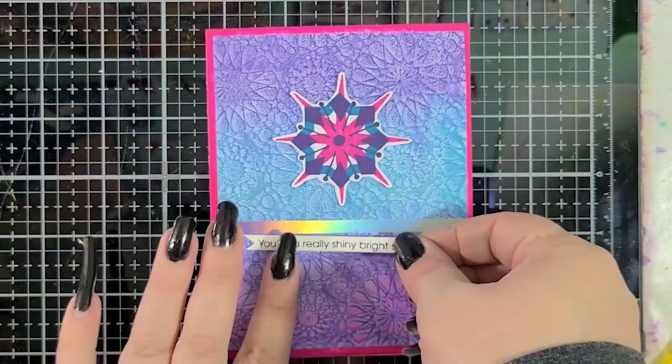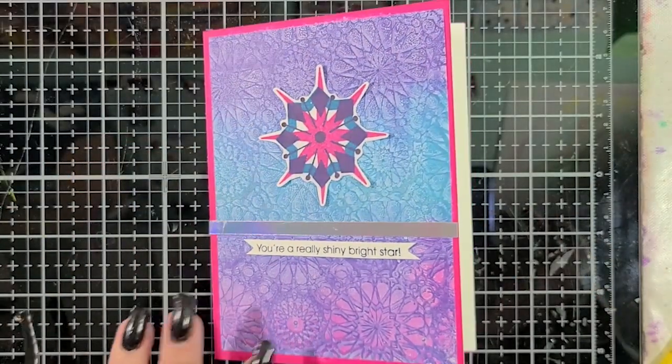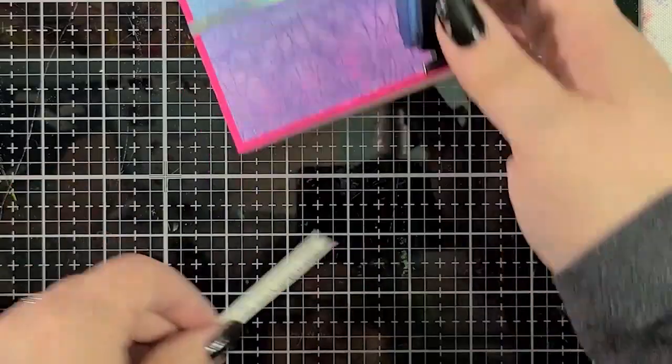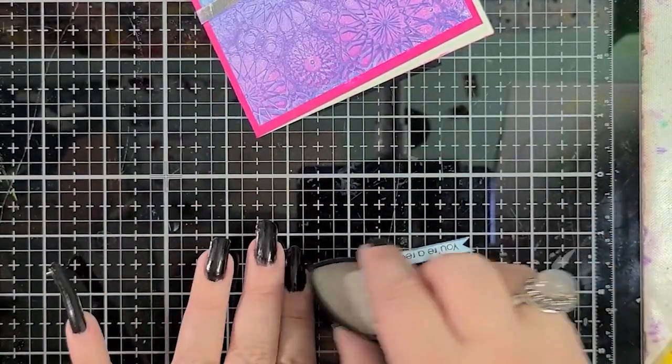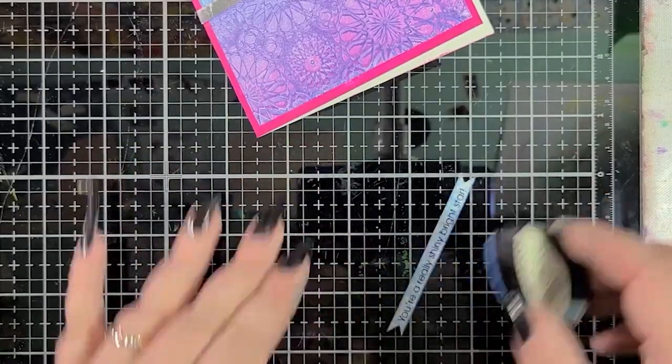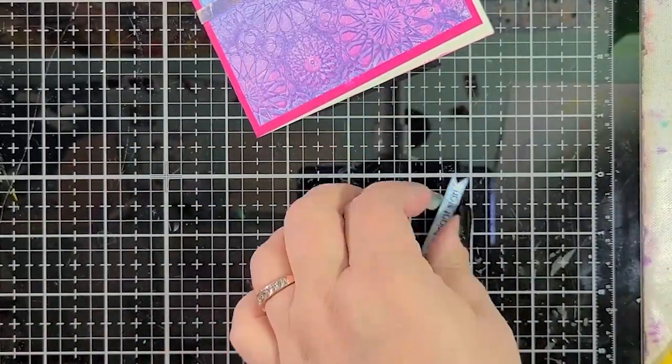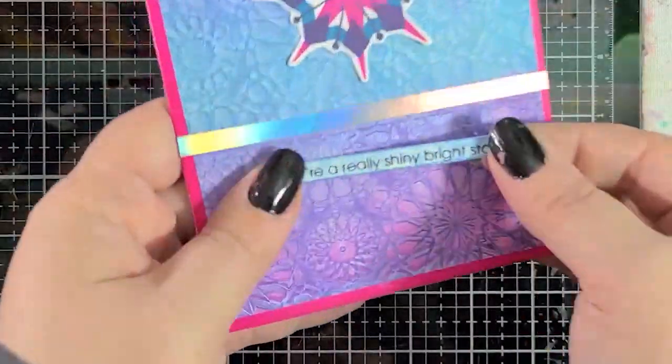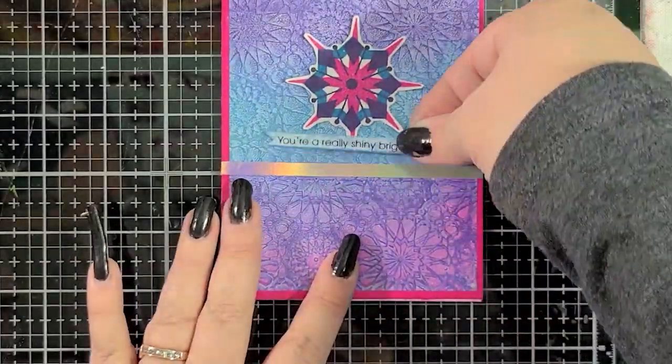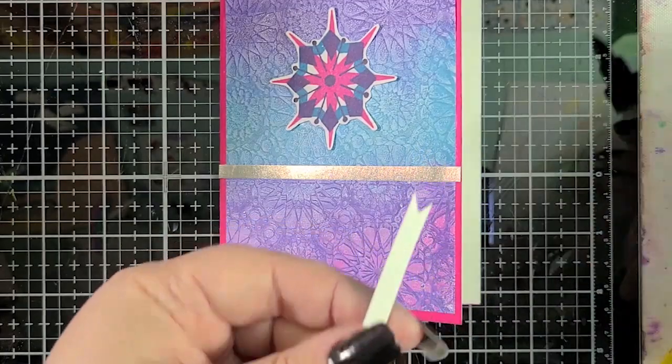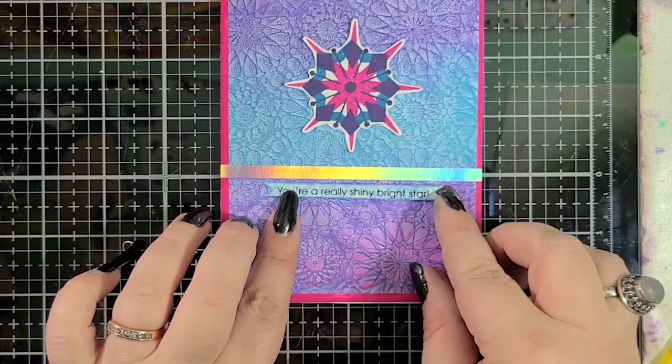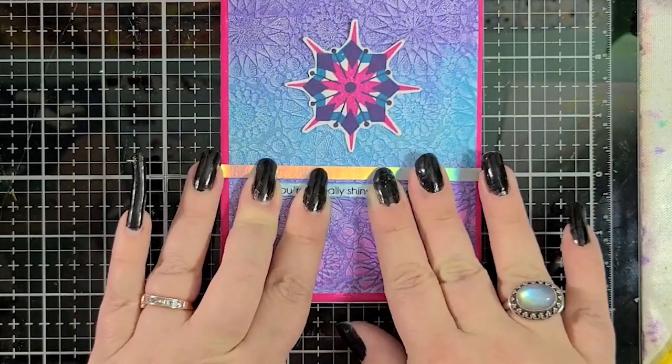Here I'm just cutting little flags at the end of my strip and I'm adding some Summer Sky Memento ink because I thought that the white was a little too, I don't know it was popping a little too much. I didn't really want it to do that so I wanted to subdue the strip just a bit. So I used Summer Sky just to kind of tone it down and I thought that it looked really nice like that. A little bit more On Point glue to attach it to my card front and that's it. We got a card.